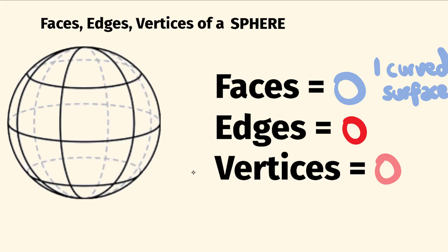So there you go. The number of faces, edges, and vertices of a sphere are all equal to zero, but we do have one curved surface.